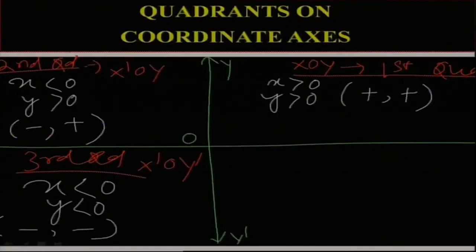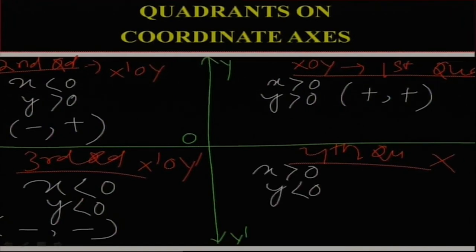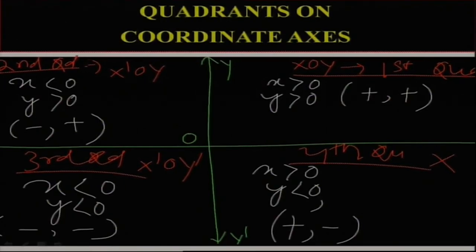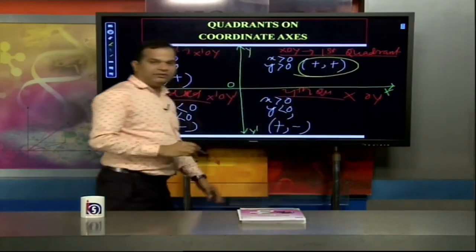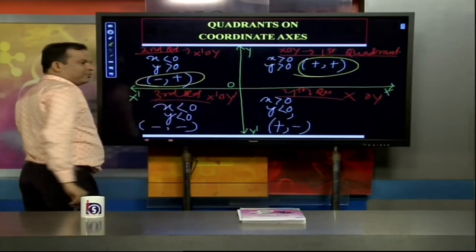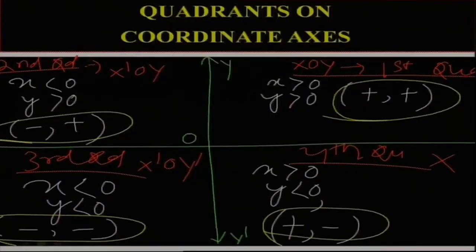The fourth quadrant is the region XOY' — where x is positive (greater than zero) and y is negative (less than zero), giving signs (+, −). To summarize: first quadrant (+, +), second quadrant (−, +), third quadrant (−, −), fourth quadrant (+, −). This is very important information in coordinate geometry.